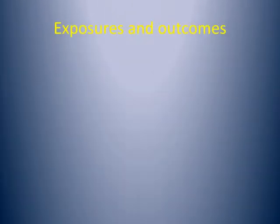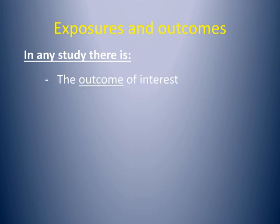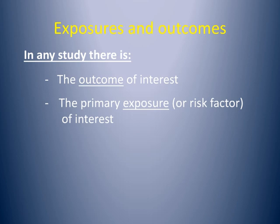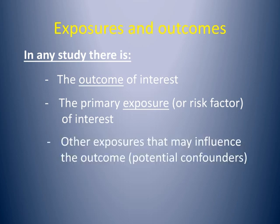Exposures and Outcomes. In a study there is the outcome of interest, the primary exposure known as the risk factor of interest, and other exposures that may influence the outcome, commonly known as potential confounders.